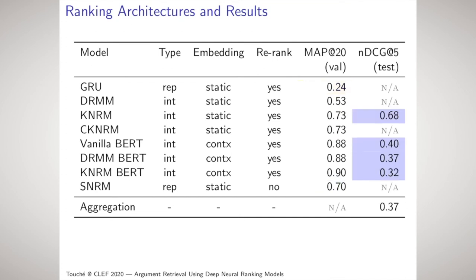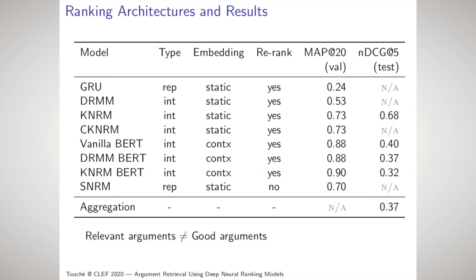By contrast, the human-annotated results indicate that while our models succeed at retrieving relevant arguments, those are not necessarily arguments that are useful in conversation. Our linear aggregation model, which was trained on the validation set, did not outperform most of the individual rankers that were evaluated. As such, future work should explicitly model argument quality dimensions beyond mere relevance.